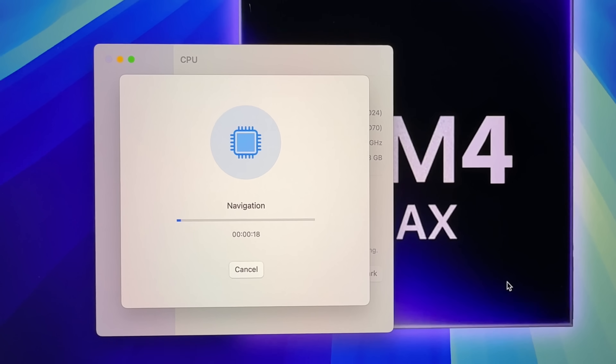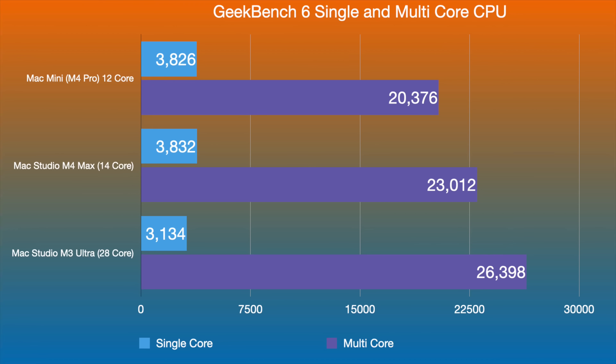In Geekbench single-core, the M4 Pro scores 3,826 and the M4 Max scores 3,832 — very similar. The M3 Ultra is slower in single-core being the previous generation. For multi-core, the M4 Pro gets 20,376 versus 23,012 for the M4 Max — a $600 difference. The baseline M3 Ultra scores 26,398 but costs $2,600 more, so paying that much for roughly 6,000 extra benchmark points is not worth it.